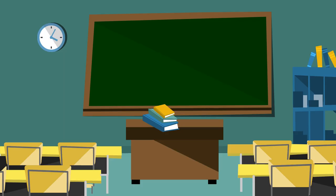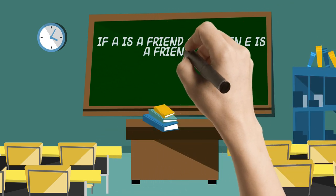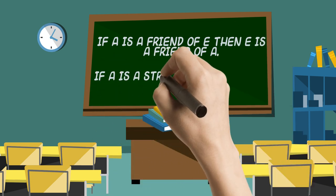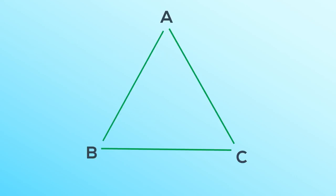So if we take any two people, say A and E, we require that if A is a friend of E, then E is a friend of A. If A is a stranger to E, then E is a stranger to A. I'm going to indicate the relationship using a coloured line. If the two people are friends, I'm going to use green for go, and if the two people are strangers, I'm going to use red for stop. Now, Ramsey theory concerns itself with groups of three mutual friends, or three mutual strangers.